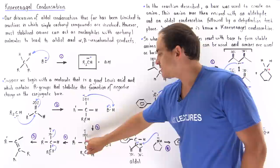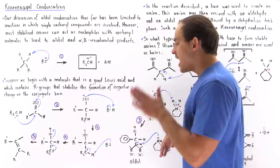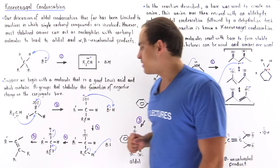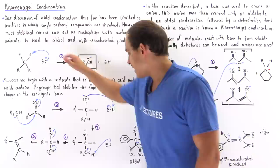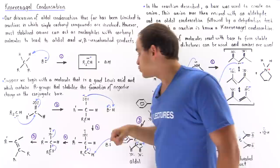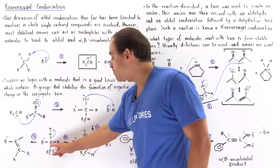Now if the conditions are proper — for example, under these basic conditions, if the temperature is high enough — then a dehydration reaction can take place and we can form our alpha-beta unsaturated product. So in step four, our base reacts and takes the other H atom, the other alpha hydrogen from this carbon, placing our lone pair of electrons onto this carbon. And in the final step, these two electrons form a pi bond between this alpha carbon and this beta carbon to form the alpha-beta unsaturated product.